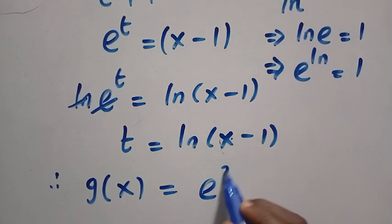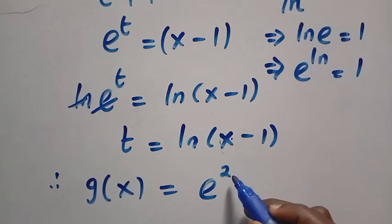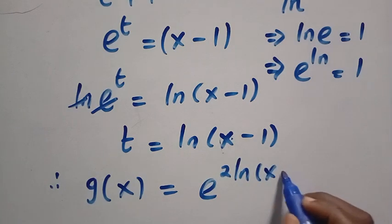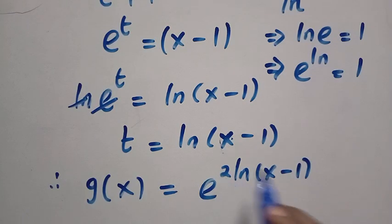This equals e to the power of 2t. Then, we change that t to ln(x minus 1), because we have already made it the subject of the formula.